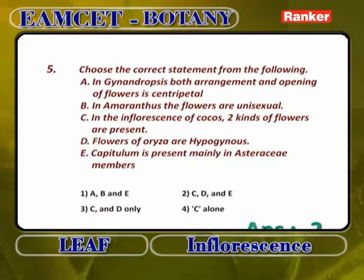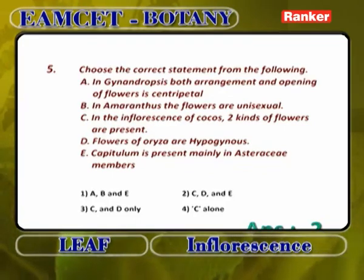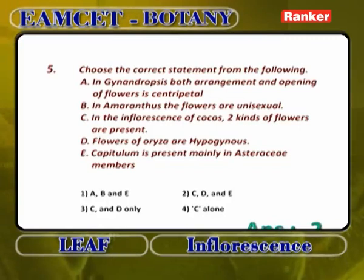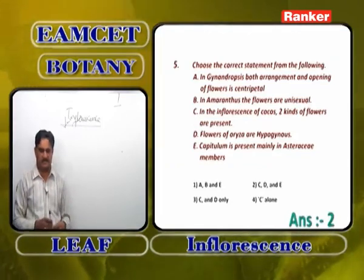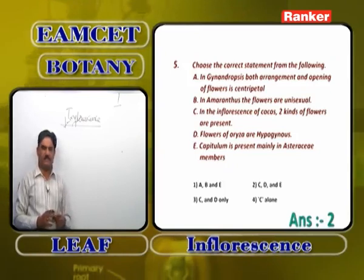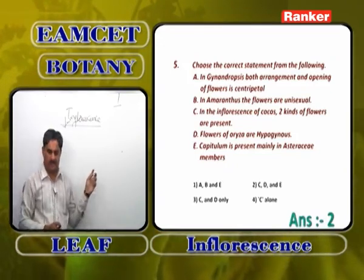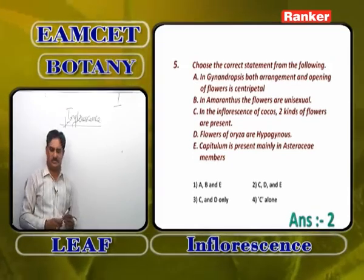Choose the correct statement: In Gynandropsis, both arrangement and opening of flowers is centripetal — wrong; only opening is centripetal, arrangement is acropetal. In Amaranthus, flowers are unisexual — wrong; in Amaranthus the inflorescence is simple spike with bisexual flowers. Correct statements are C, D, and E: in Cocos, two kinds of flowers (male and female) are present; flowers of Oryza are hypogynous; and capitulum is found mainly in Asteraceae members.